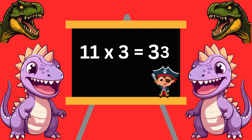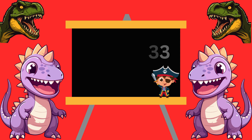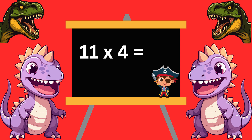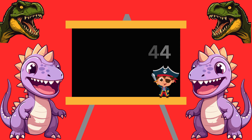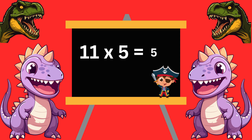11 threes are 33. 11 fours are 44. 11 fives are 55.